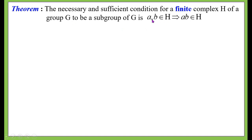Therefore, in the previous statement the condition was a, b ∈ H implies ab⁻¹ ∈ H. Whereas here, the condition is a, b ∈ H implies a·b ∈ H. That is, for a finite complex H of a group G to be a subgroup or to be a group, it needs to satisfy only the closure axiom.